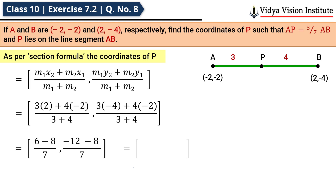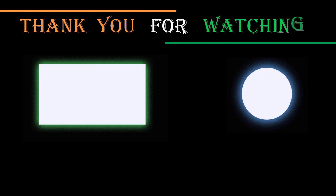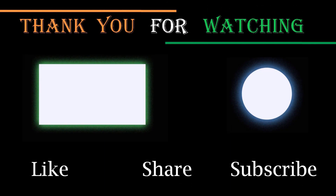Simplifying, the x-coordinate = -2/7 and the y-coordinate = -20/7. Hence the coordinates of P are (-2/7, -20/7). That is our answer.